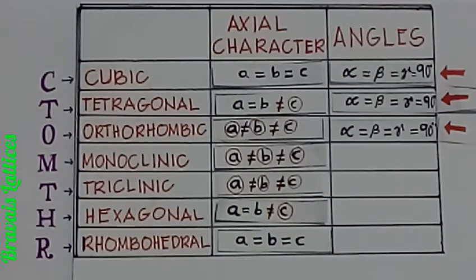Now let us check the angles. The first three crystal structures have all the angles equal to 90 degrees as shown.